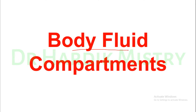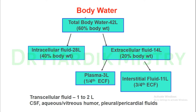Today we begin with body fluid compartments. Total body water is 42 liters, which is 60% of body weight. It is divided into intracellular fluid (ICF) of around 28 liters (40% of body weight) and extracellular fluid (ECF) of 14 liters (20% of body weight).